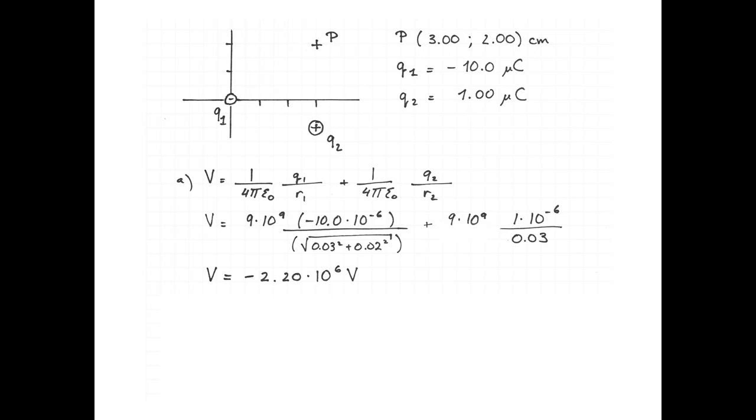The electric potential at point P is minus 2.2 times 10 to the 6 volts. The potential energy of a charge placed at point P will be Q multiplied by V, the potential at point P.